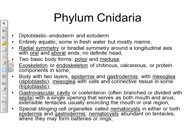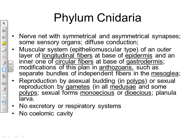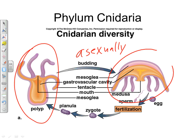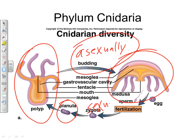Most cnidarians have two body forms during their life cycle: the polyp and the medusa. Polyps typically grow attached to rocks on the ocean floor and reproduce asexually by budding. The bud grows into a medusa — an inverted bell shape with tentacle-like extensions — which is what we normally think of as a jellyfish. The medusa swims freely, reproduces sexually by releasing sperm and eggs, which fertilize to form a zygote, then a planula larva, which attaches to a rock and grows back into a polyp.